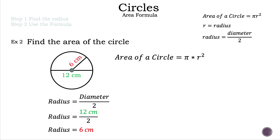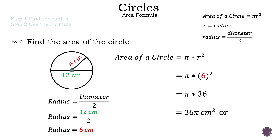We substitute 6 centimeters into the formula for the letter r, giving us pi times 6 squared, with the number in parentheses to help with the next steps. We then square 6: six squared is 36 because 6 times 6 is 36. So now we have pi times 36. We reorder to write it as 36 pi — whole number first, irrational number second. Our next step is to add the units, which are centimeters squared.